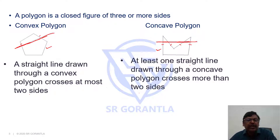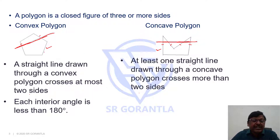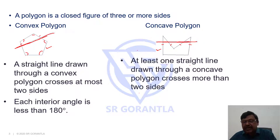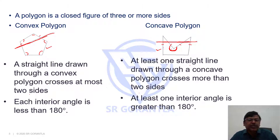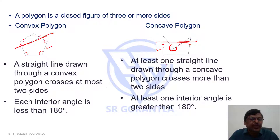One more important point: each interior angle of a convex polygon is less than 180 degrees. Whereas in a concave polygon, at least one interior angle will be more than 180 degrees — you can see this angle here is greater than 180. So these are two basic properties or differences between a convex polygon and a concave polygon.